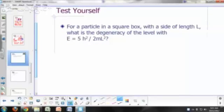Here's a quick question. If you have a particle in a square box with a side of length L, what is the degeneracy of the level that has an energy equal to 5h squared over 2mL squared?